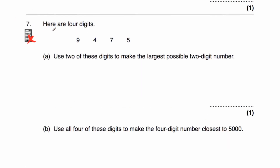Question number 7 says here are 4 digits: 9, 4, 7, and 5. We've been asked to use 2 digits to make the largest possible 2-digit number. So it's going to have a tens and a ones. We want to put the largest digit in our tens column and our second largest digit in the ones column, so it's going to be 97. The answer would be 97.